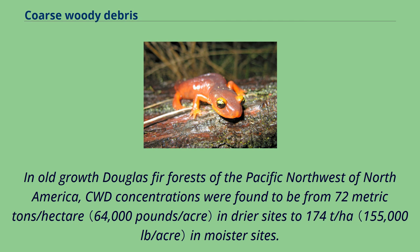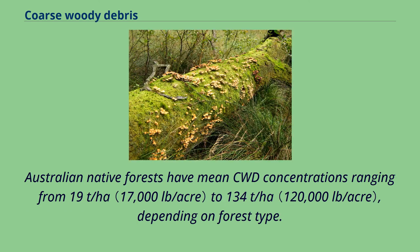In old-growth Douglas fir forests of the Pacific Northwest of North America, CWD concentrations were found to be from 72 metric tons per hectare in drier sites to 174 t/ha in moister sites. Australian native forests have mean CWD concentrations ranging from 19 t/ha to 134 t/ha, depending on forest type.